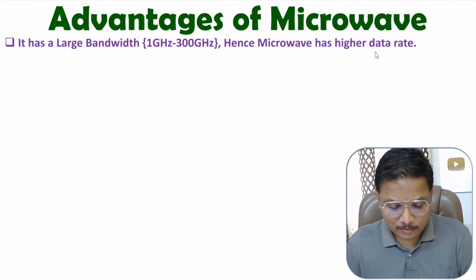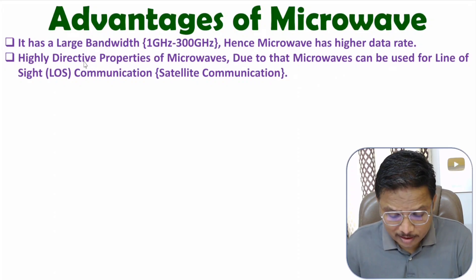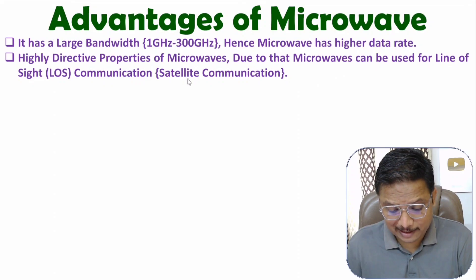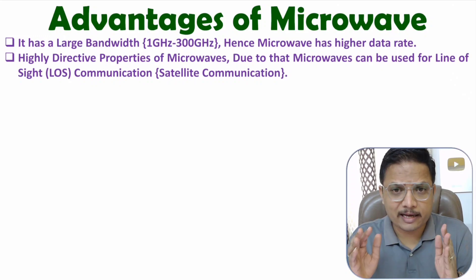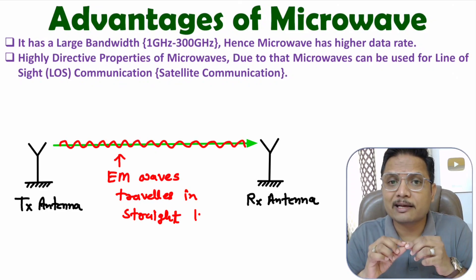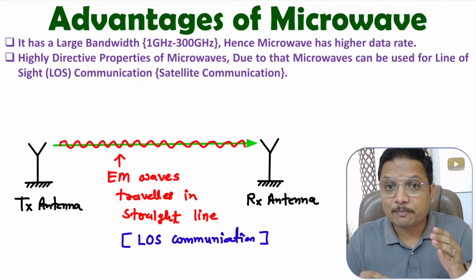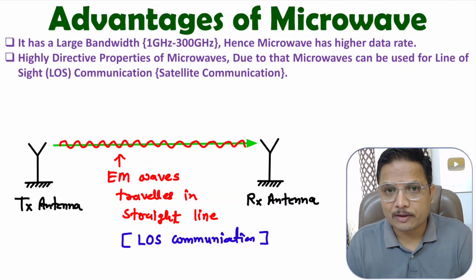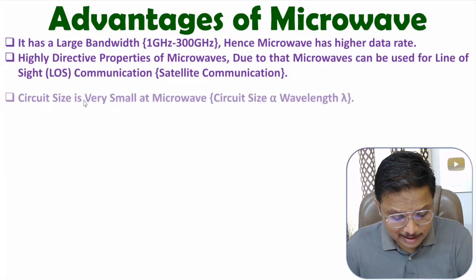The second advantage is based on the directive properties of microwave. Microwaves are highly directive, which is why they are used with line-of-sight communication, like satellite communication. The microwave frequency range from 1 GHz to 300 GHz has a highly directive property, and the electromagnetic waves traveling with microwave travel in a straight line. That's why we use line-of-sight communication with microwave.